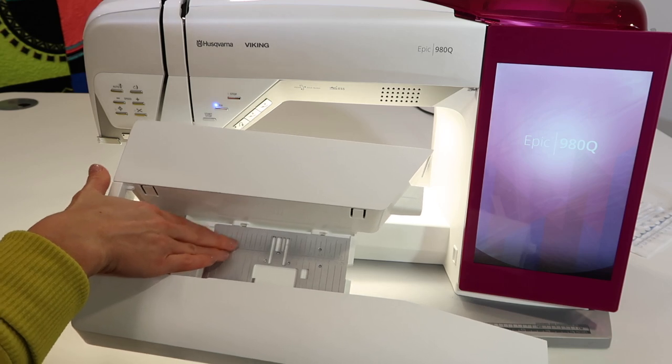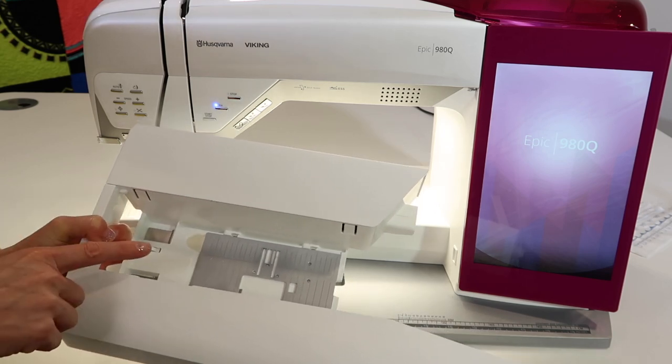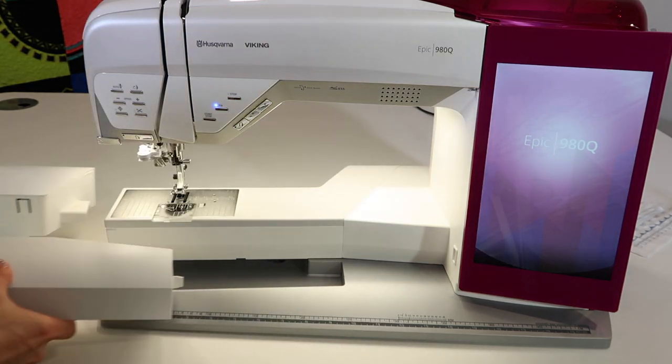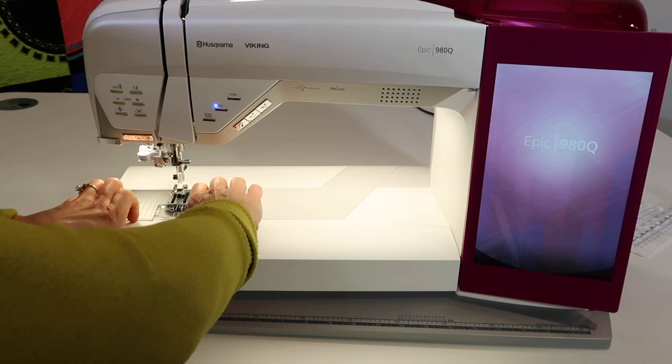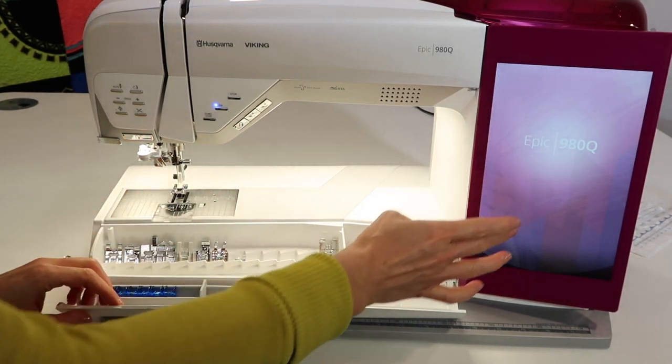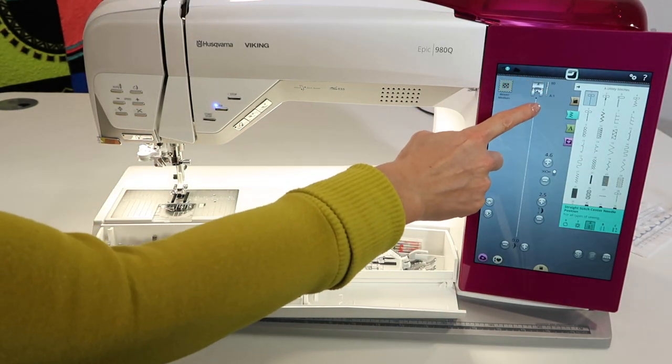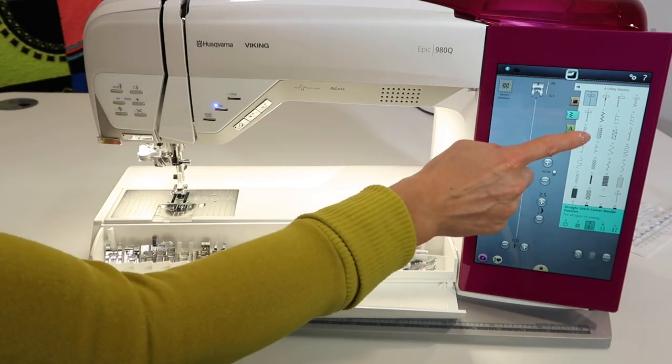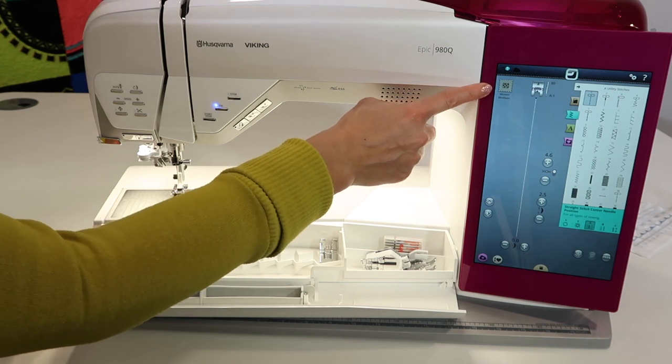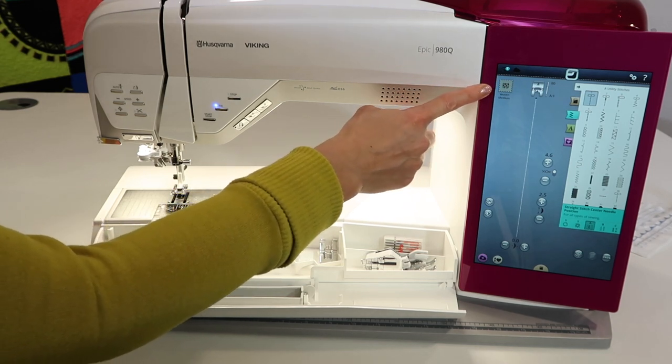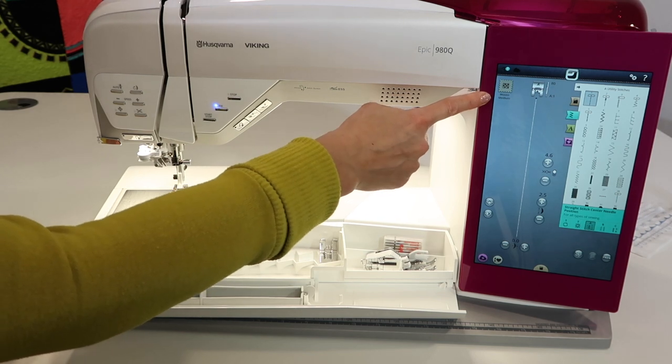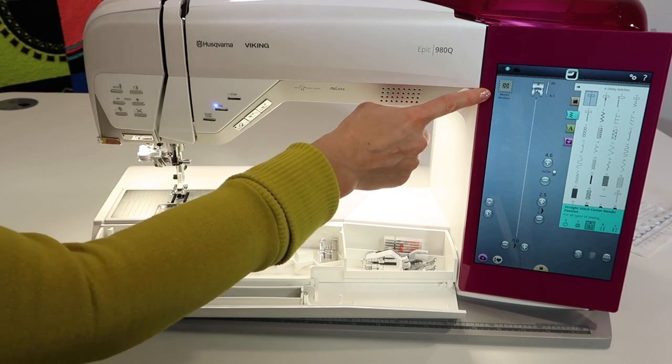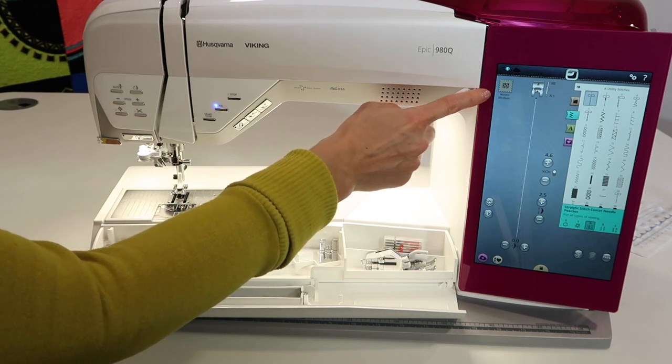You also find that the straight stitch throat plate included with this model sits and has its home at the base of the accessory box. One of the things I love is no matter which stitch I'm selecting, it will show me which foot is ideal for that particular stitch. That will change based on what you pick and also which fabric you have selected in the sewing advisor. If you're not sure what fabric you're using, I suggest that you leave it on the woven medium setting in the sewing advisor.